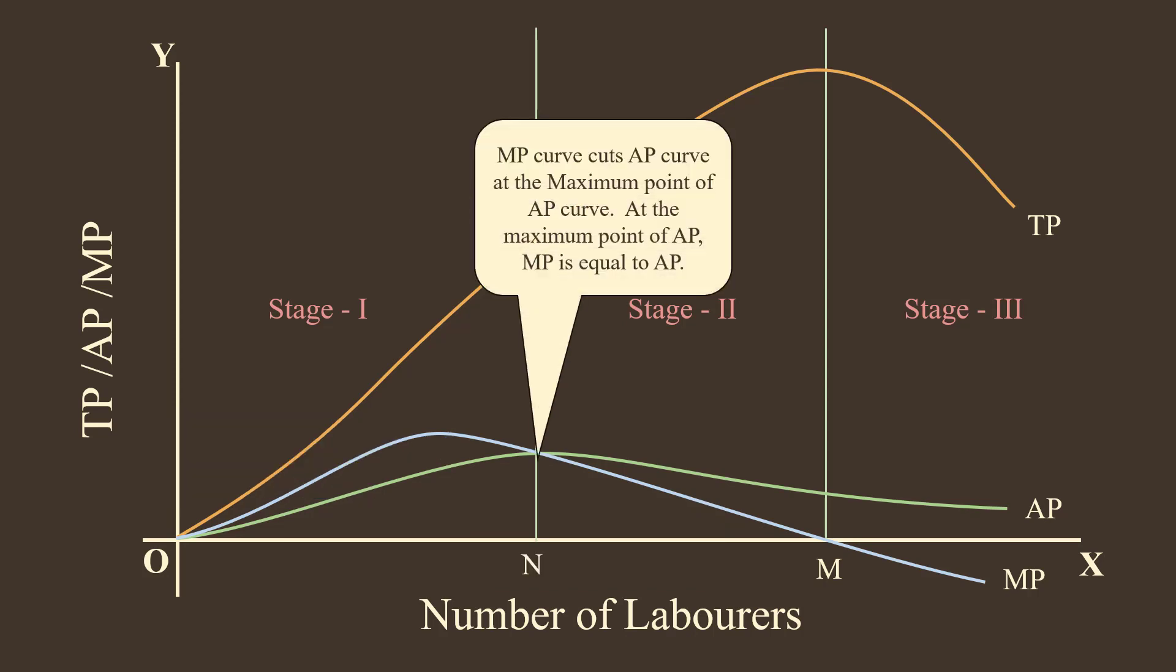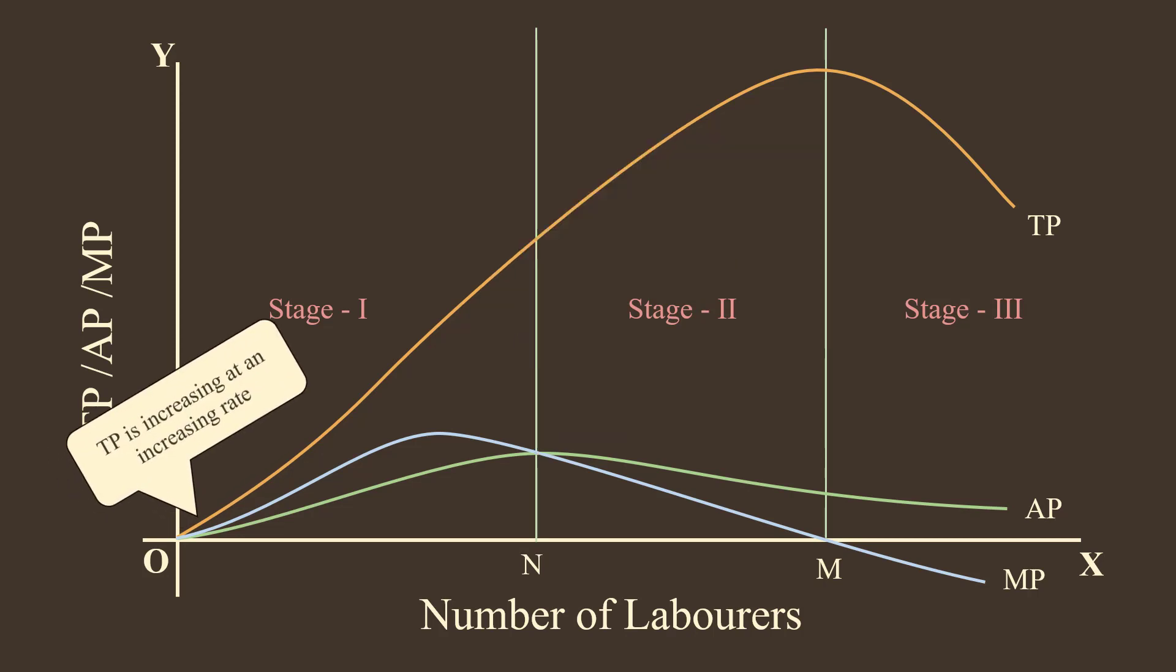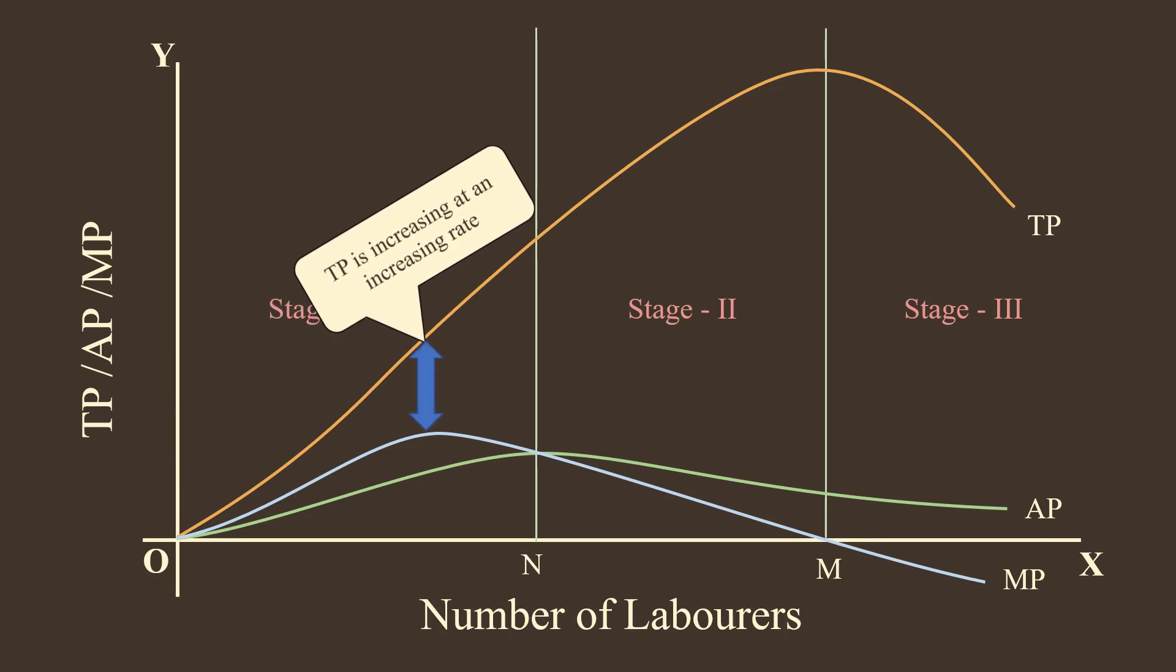4. Marginal product curve cuts average product curve at the maximum point of the average product curve. At the maximum point of average product curve, marginal product is equal to average product.